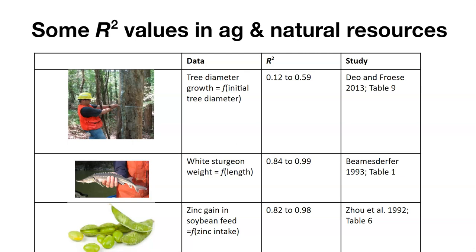If we look at the weight of white sturgeon as a function of their length, here's one study that found the R squared values to be quite high, 0.84 to 0.99. If we look at the amount of zinc gain in soybean feed as a function of zinc intake, this study provided R squared values of 0.82 to 0.98. Here are just a few example R squared values from the literature.